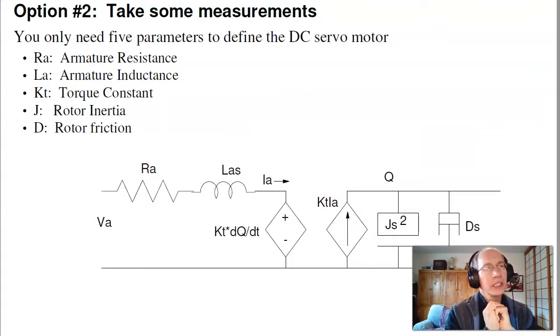Another way to do it is today's lecture: let's do a couple measurements. You really don't have to know all that much to find the dynamics of a motor. There's only five parameters that define it: the armature resistance, the armature inductance, the torque constant in volts per radian per second or newton meters per amp, the motor inertia, and the motor friction. So if I can do five tests, I can figure out what the motor dynamics are.